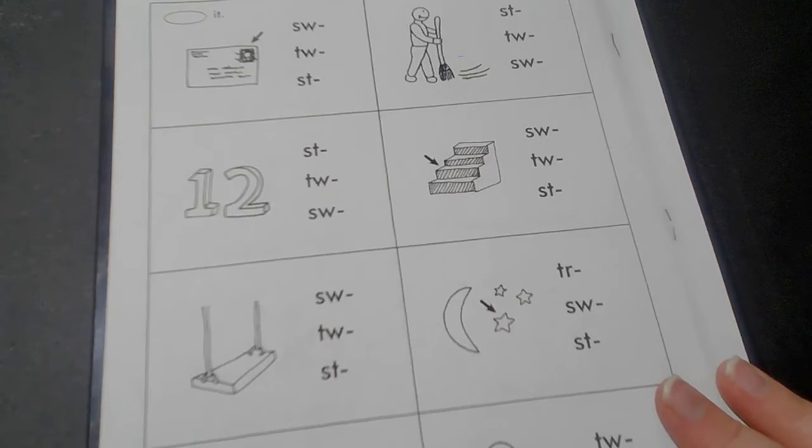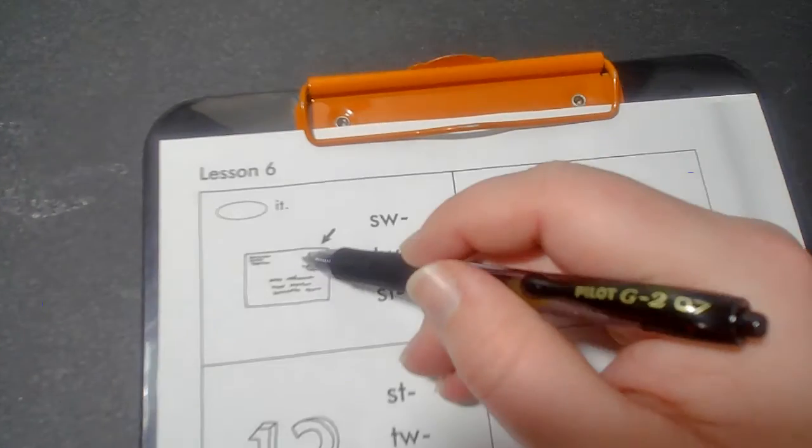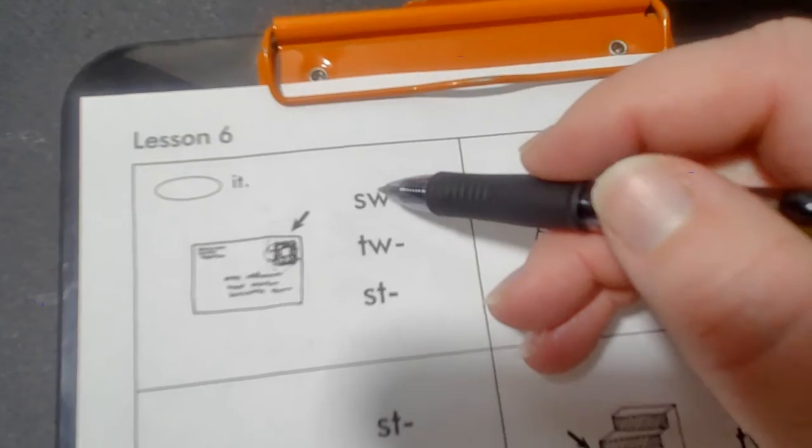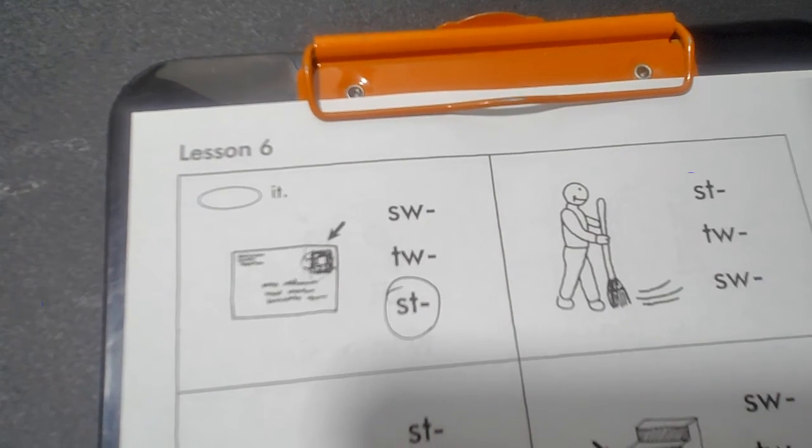So look at each of those pictures and circle which one it is. Stamp - st, amp, stamp.